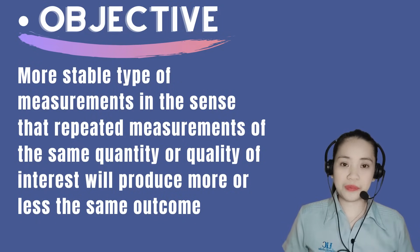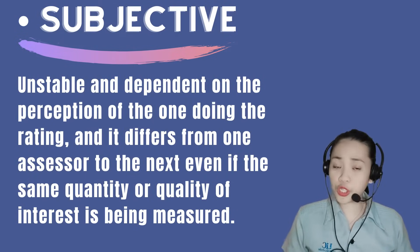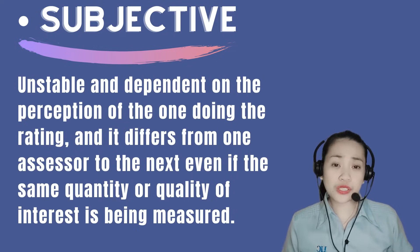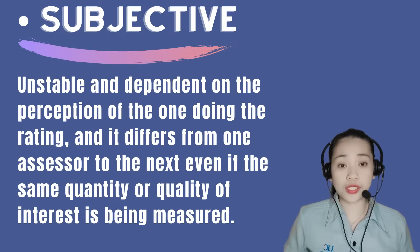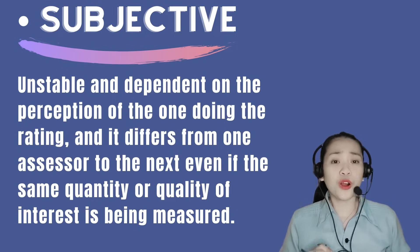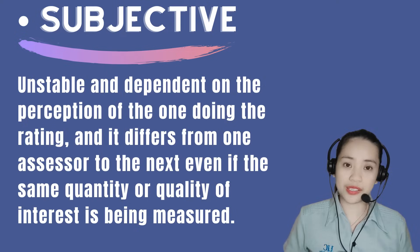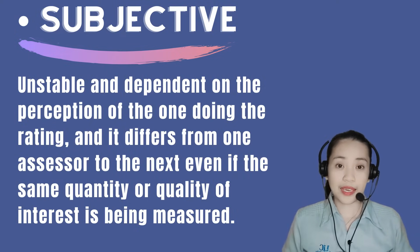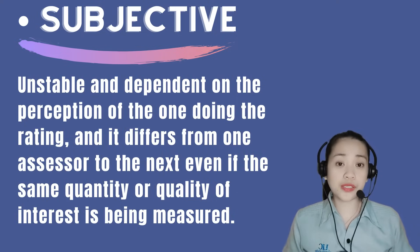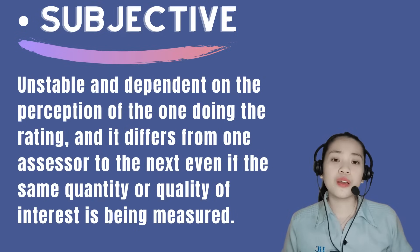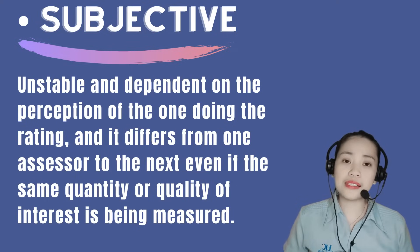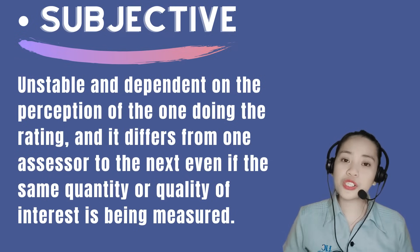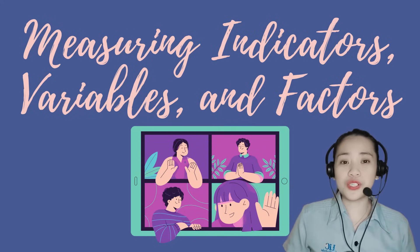In subjective measurement, results are unstable and dependent on the perception of the one doing the rating, and they differ from one assessor to the next, even if the same quantity or quality of interest is being measured. An example of subjective measurement is an essay — it would depend on the checker's perception, whether the teacher values grammar, flowery words, or the content of the essay. That is why it is recommended that teachers should not know the name of the writer while checking an essay, and also that teachers should use rubrics.